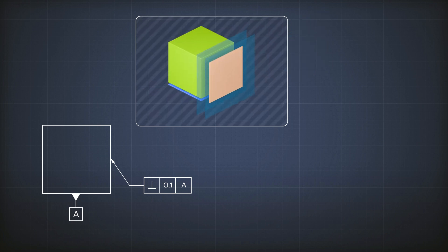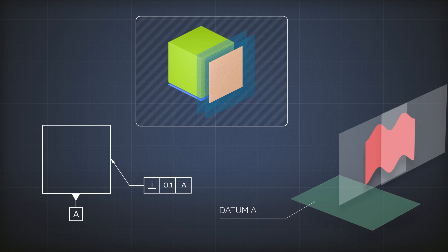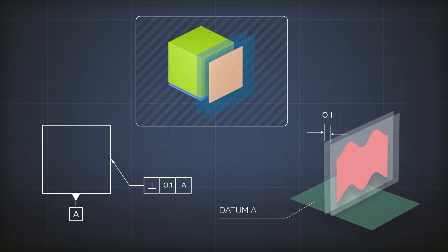These two parallel planes are perpendicular to surface A, and the distance between them is 0.1, and any point on the tolerated surface should lie between these two parallel planes.